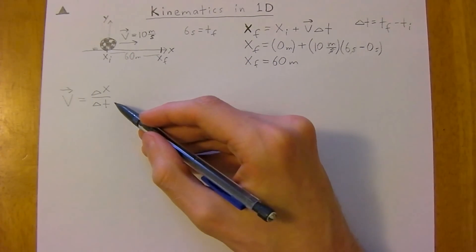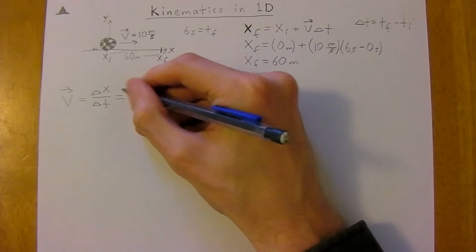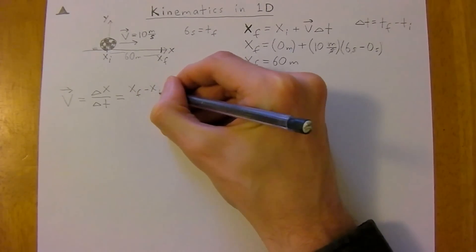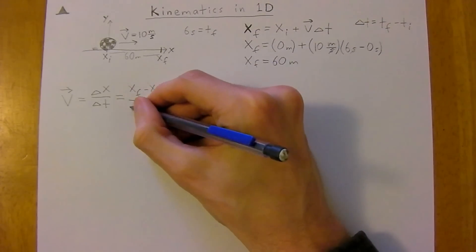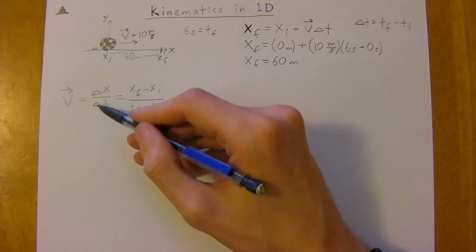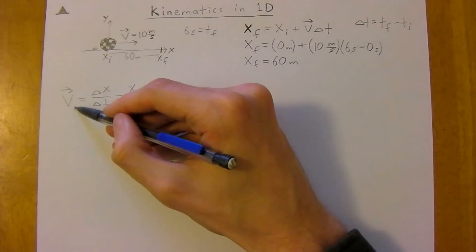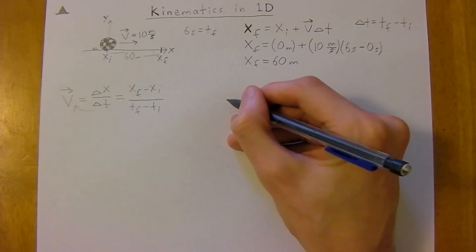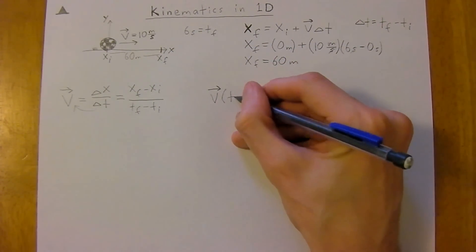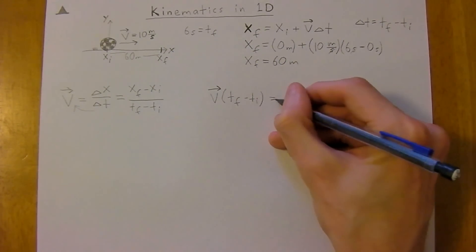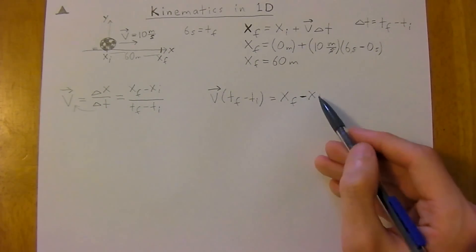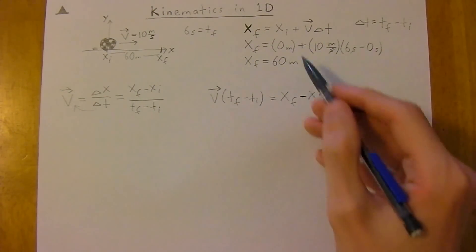And this we can just write another way. So remember that delta x is the same as saying x-final minus x-initial, and delta time is the same as time-final minus time-initial. So if we were to multiply our time on both sides, then we would get our velocity times your time-final minus time-initial equals your x-final minus x-initial.